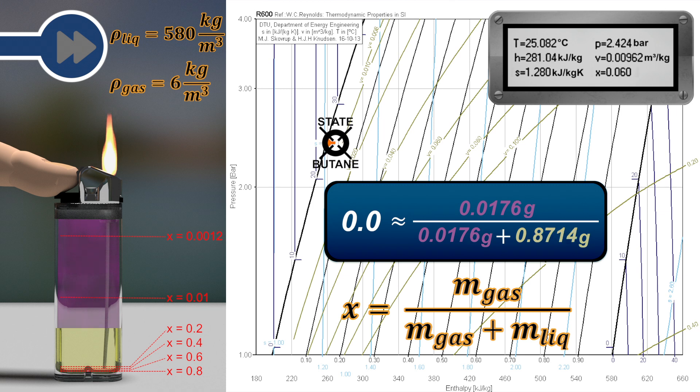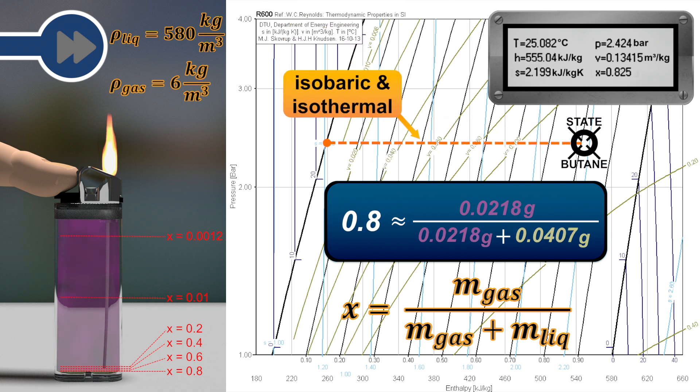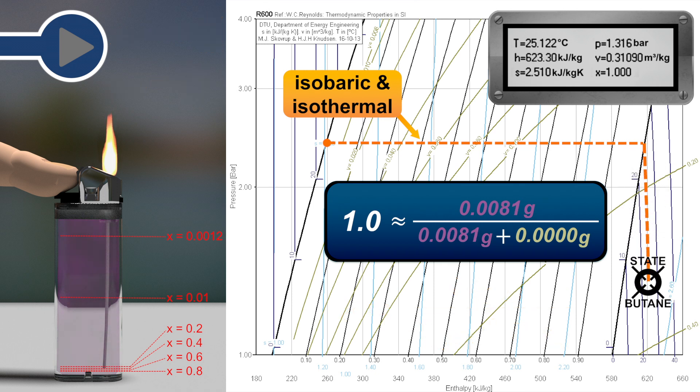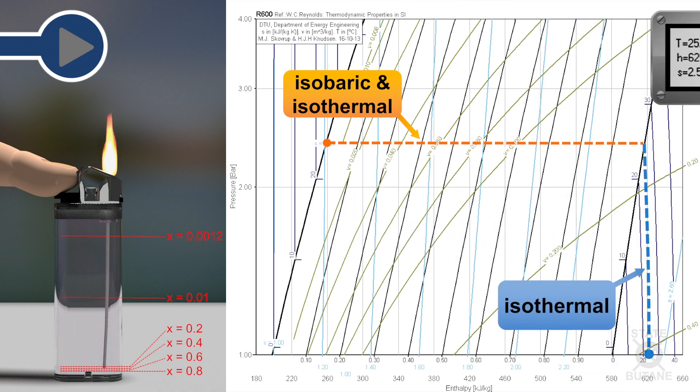The gas in the lighter adapts to the temperature of the surroundings. Hence the change of state is isothermal, which in the two-phase domain is also isobaric. When no liquid is left, the tank of a lighter only contains gaseous butane and its state is found directly on a line of saturated gas. If a lighter is further operated, the pressure in the lighter is reduced down to the environmental pressure in an isothermal change of state.